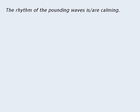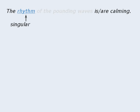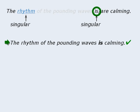Let's try some examples beginning with this one. To help us determine the correct answer, let's eliminate some fluff. Here the prepositional phrase 'of the pounding waves' functions as an adjective modifying the noun 'rhythm,' so we can eliminate it. From here we can see that the subject of the sentence is 'rhythm.' Since the word 'rhythm' is singular, it must take a singular verb. As such, the correct verb here must be the singular verb 'is,' as in: the rhythm of the pounding waves is calming.